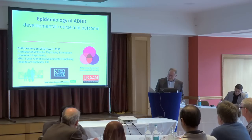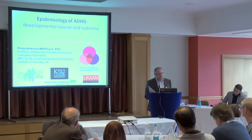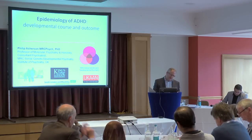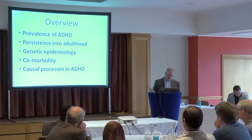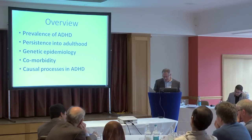I'm going to give an overview of epidemiological findings in ADHD, particularly focusing on ADHD in childhood and then its life course trajectory forwards into adulthood. I'll talk about the prevalence of ADHD, some studies looking at the persistence into adulthood, and then touch on genetic epidemiology — basically family and twin studies. I'll also cover comorbidity in population and clinical samples, and how epidemiological approaches can help us think about causal processes.